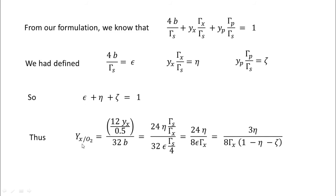Thus, Y_x/O_2 is mass of cells by mass of oxygen: 12 Y_x by 0.5, which is 24 Y_x. Y_x from here is nothing but eta gamma_s by gamma_x. That is what I have done here. And 32b: b from here is epsilon gamma_s by 4. So epsilon gamma_s by 4 has been used for b here. If we cancel the terms, 4 goes here 8 times, 8 goes here 3 times.